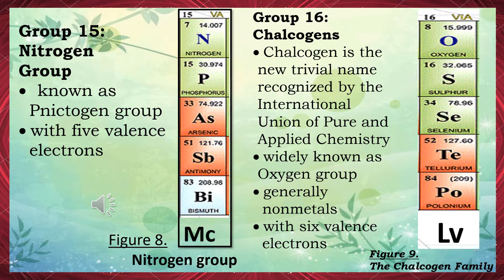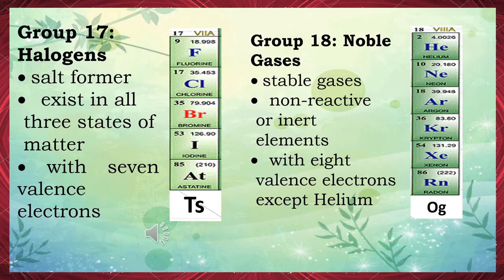Group 16 — Chalcogens. Chalcogen is the trivial name recognized by the International Union of Pure and Applied Chemistry, widely known as the oxygen group, generally non-metals with six valence electrons. The chalcogen family: oxygen, sulfur, selenium, tellurium. Group 17 — Halogens: salt formers, exist in all three states of matter, with seven valence electrons. Members: fluorine, chlorine, bromine, iodine, astatine, and tennessine.